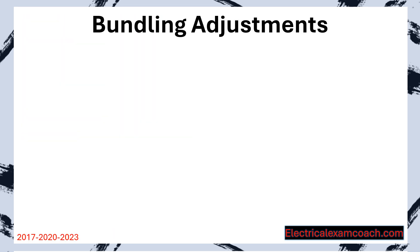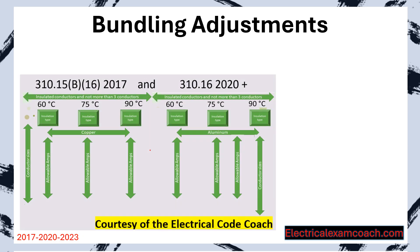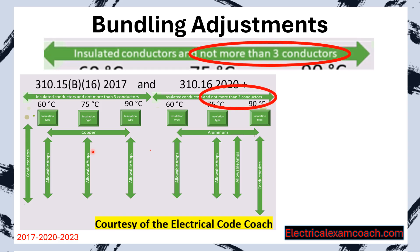Let's dive into bundling adjustments. Let's take a look at our primary ampacity table. These values in this table are true if — looking at the paragraph above the table — there are not more than three current carrying conductors inside of a cable, pipe, or even buried in the earth together.